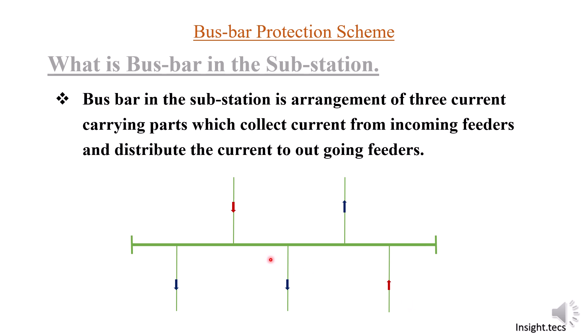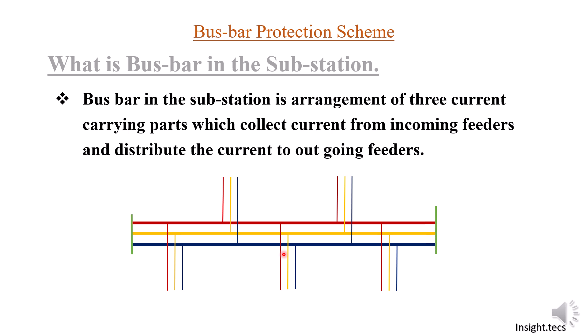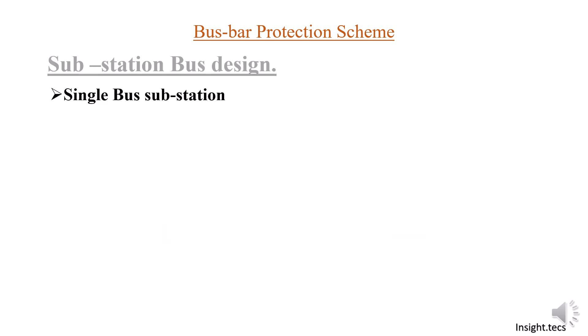There may be incoming feeders and outgoing feeders depending on the direction of current flow. For example, the red arrows are the incoming feeders from which current is coming towards the bus, and blue are the outgoing feeders from which current is flowing outside from the bus. The bus bar is actually made of three phases R, Y, and B. When you visit a substation, you will see this practically, but for simplicity we have considered a single line diagram combining all three phases into a single line.